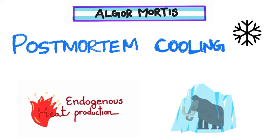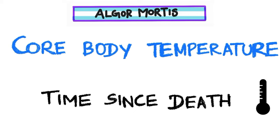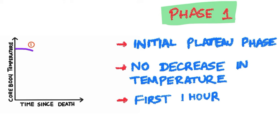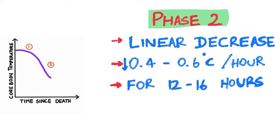The core body temperature can be measured to give a clue regarding the time since death. The usual sites for measuring core body temperature are the rectum and, if not possible, the subhepatic space — the space under the liver. Initially there is no decrease in body temperature because of ongoing metabolism in the still-living tissues, creating a plateau phase for the first hour. Then there is a linear decrease in body temperature — phase 2 — at a rate of 0.4 to 0.6 degrees Celsius per hour, lasting about 12 to 16 hours.